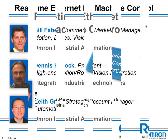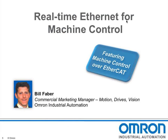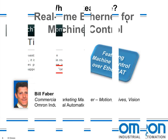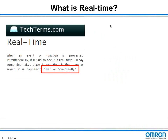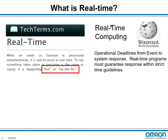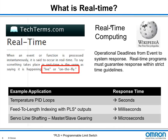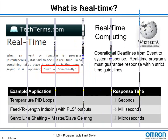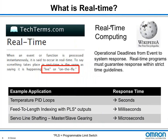Thanks, Dave. Real-time Ethernet for machine control — so what is real-time? According to tech terms, it's live or on the fly. According to Wikipedia, it has to do with operational deadlines or guaranteeing response within specific time guidelines. It's really a relative term unless put into context. In machine control, real-time could mean seconds for PID loops like controlling oven temperature, milliseconds for I/O coordination with simple indexing, or microseconds for tight coordination of several axes on a master-slave line shaft application.